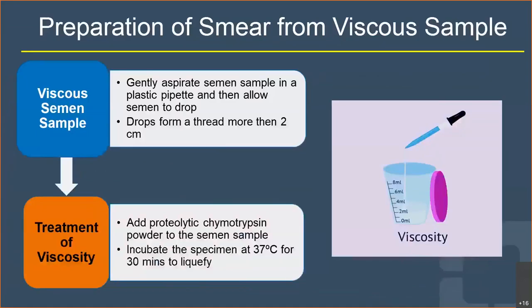Preparation of a smear from a viscous sample: the sample can be treated with a proteolytic enzyme such as trypsin and incubated at 37 degrees for 30 minutes. Once liquefied, it is ideal to prepare the smear. A highly viscous sample should not be used directly as it will result in a thick, uneven smear.